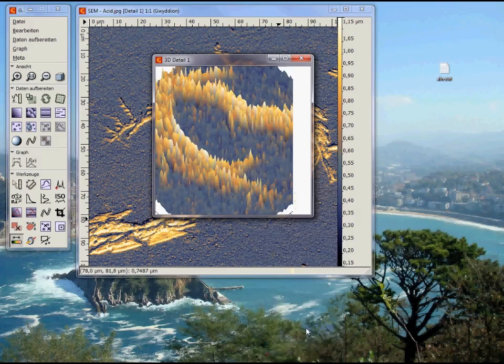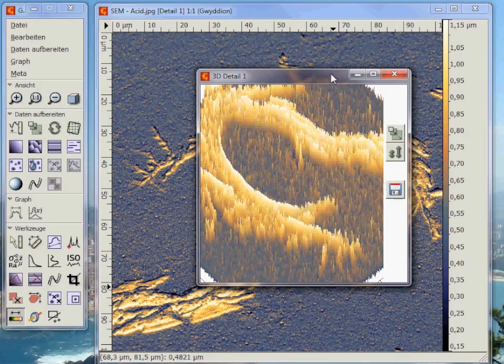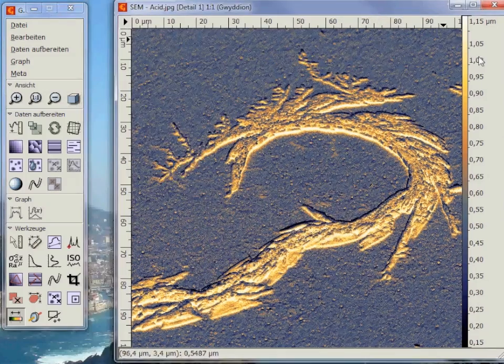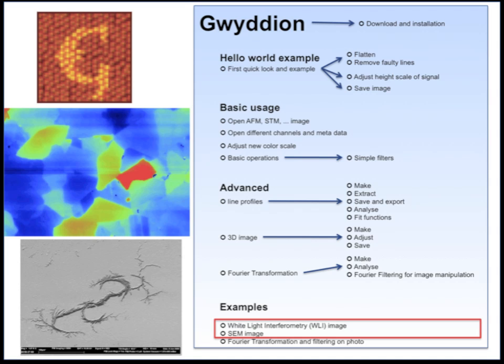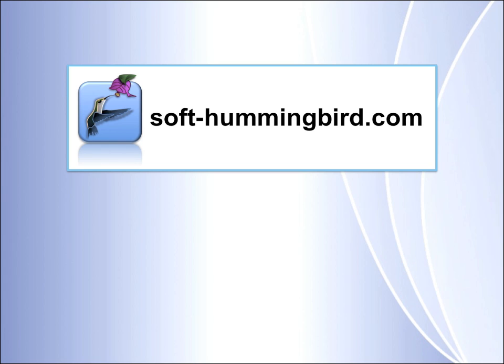Let's give it the color sky, and you can save the image. So in this tutorial we saw how to import white light interferometry images and simple SEM images. You can load and manipulate any image with GVIDION, even photos. In the next tutorial I will show you how to insert a photo and how to make Fourier transformations to it and how to Fourier filter it to make special effects. Don't forget to vote if you like this video and subscribe. Please visit my web page SoftHummingbird where you can download many tutorials and sample data files.